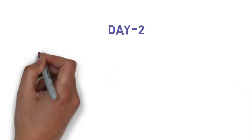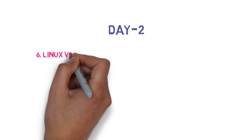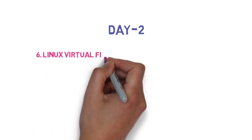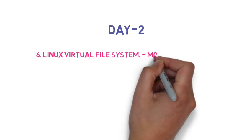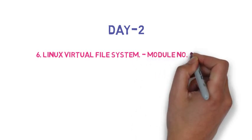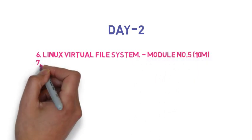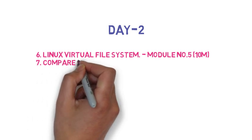Now for Day 2. The sixth question is the Linux virtual file system, which can come for 10 marks. The seventh question is: compare disk scheduling algorithms, which can come for 5 or 10 marks depending on the exam.